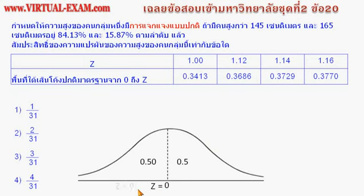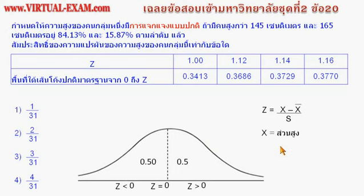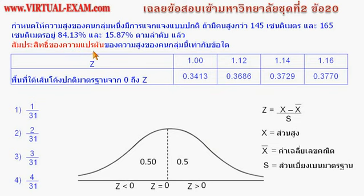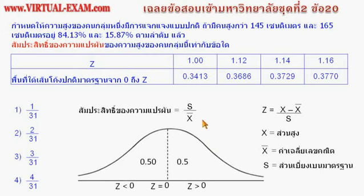ใน X คือข้อมูล ในโจทย์ข้อนี้ X คือส่วนสูง X-bar คือค่าเฉลี่ยของส่วนสูง S คือส่วนเบี่ยงเบนมาตรฐานของส่วนสูง ค่าสัมประสิทธิ์ของความแปรผันที่โจทย์ถาม คำนวณจาก S ส่วน X-bar ขั้นตอนถัดจากนี้เป็นการหาค่า S และ X-bar จากข้อมูลที่โจทย์กำหนดให้ เพื่อนำมาคำนวณค่าสัมประสิทธิ์ของความแปรผัน